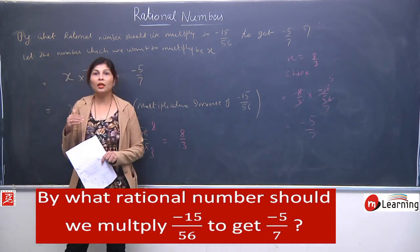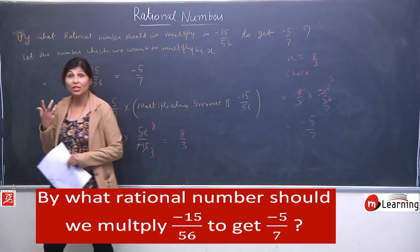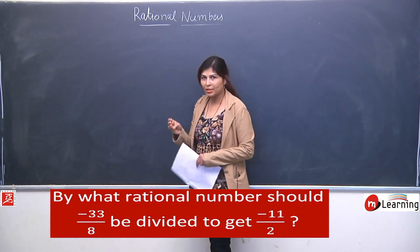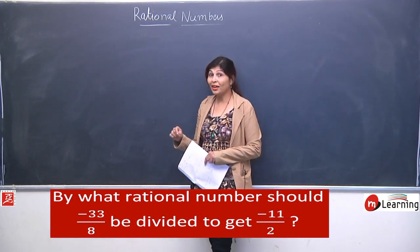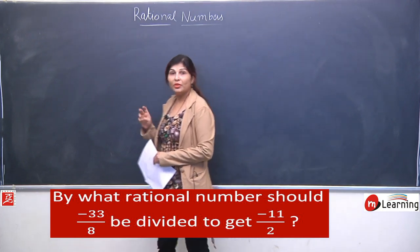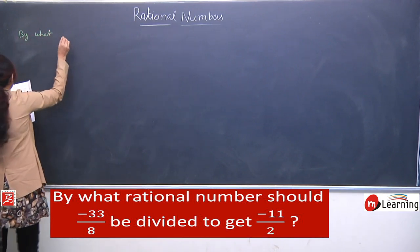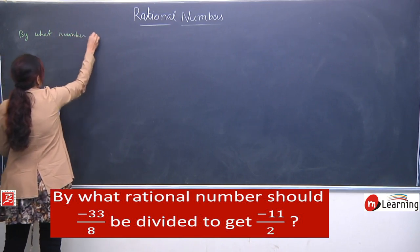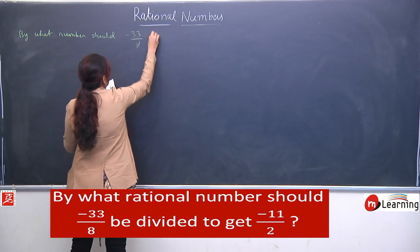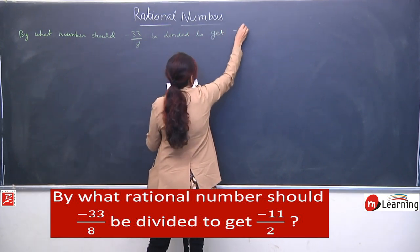Now, I will take division. Dosto, we have considered plus, minus, and product also — means multiplication also. Abhi hum ne kya nahi liya? Division. Agar hum division nahi lenge toh woh bura maan jayega! So now I am taking two questions based on division of rational numbers. By what number should minus 33 by 8 be divided to get minus 11 by 2?